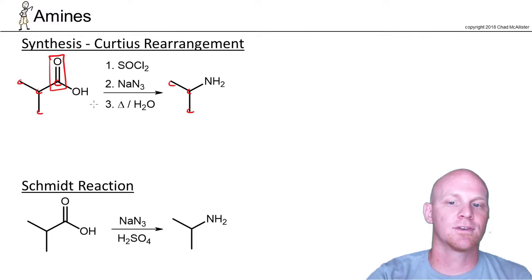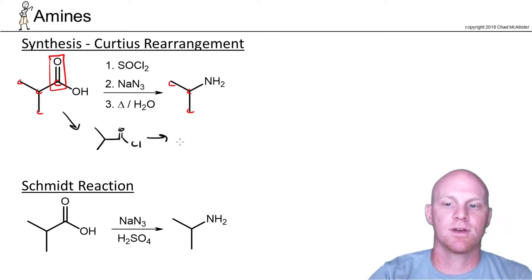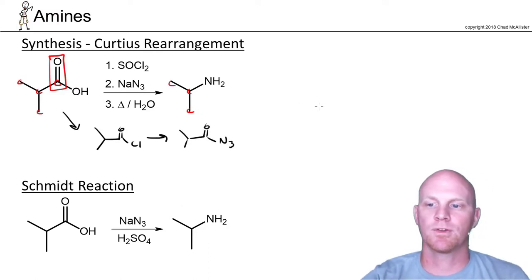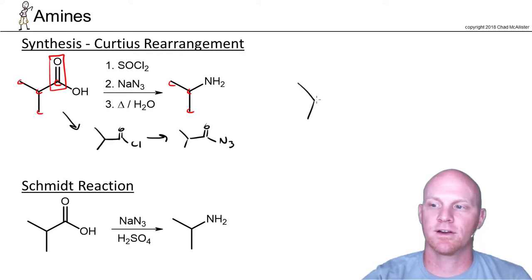We know that with the carboxylic acid, SOCl2 will transform this into an acid chloride. Then NaN3 here will turn this into what's called an acyl azide, looking like this. If we take a little bit deeper look at what that acyl azide looks like here,